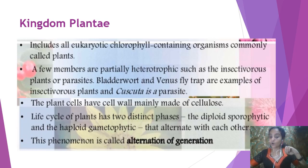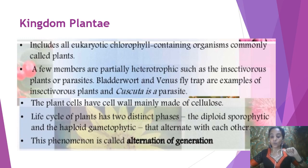Eukaryotic organisms have a proper nucleus and all the cell organelles with a membrane bound. Another thing is that they are photosynthetic — another name is autotrophic organisms. What is an autotrophic organism? The organism that can make its own food with the help of raw materials: sunlight, water, carbon dioxide, and chlorophyll. This process is called photosynthesis.